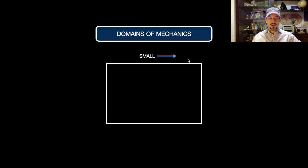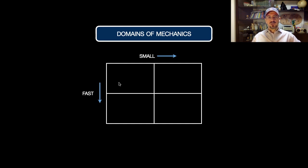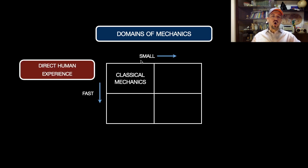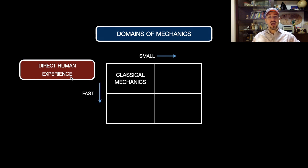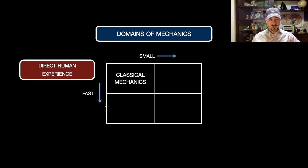This direction is pointing to a small scale — to objects with small dimensions — and this direction is pointing to high velocities. Classical mechanics is under this domain where the objects are not too small and are not too fast. This theory is based on our direct human experience, the experience of everyday life.